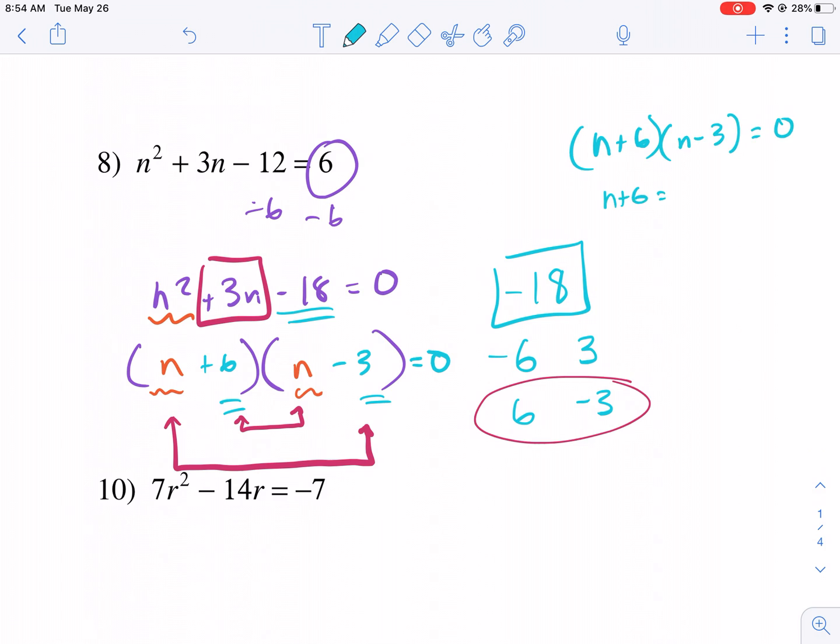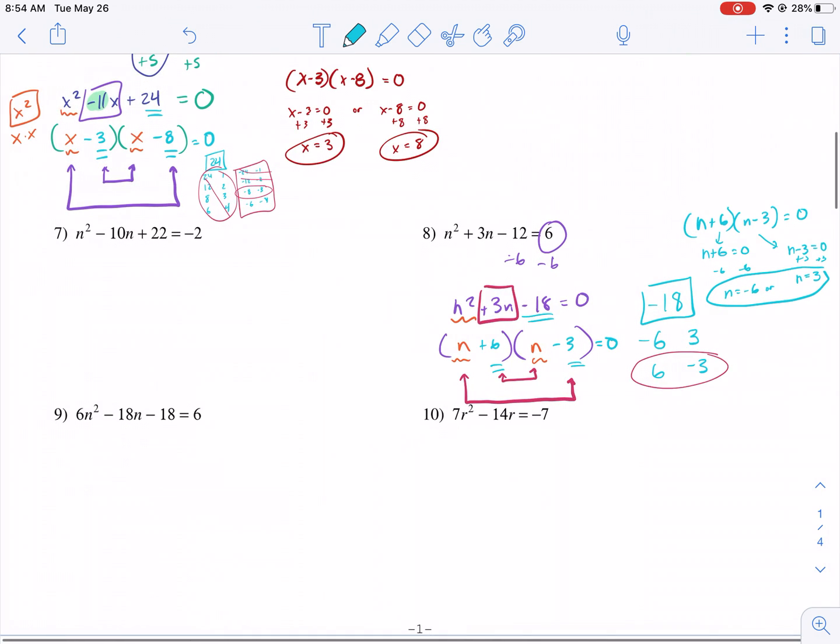So now we have our problem. We have n plus 6, n minus 3 equals 0. So n plus 6 needs to be equal to 0, and n minus 3 needs to be equal to 0. So we subtract 6, we get n equals negative 6. Or add 3, we get n equals 3. Those are our two answers. You're always going to get two answers.